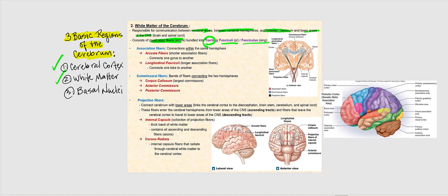The three types of tracts are the association fibers, the commissural fibers, and the projection fibers. Let's begin with the association fibers — these are connections within the same hemisphere. One example of an association fiber are the arcuate fibers. These arcuate fibers are shorter association fibers, meaning the myelinated fibers or axons are short.